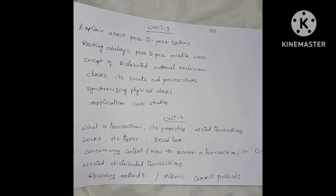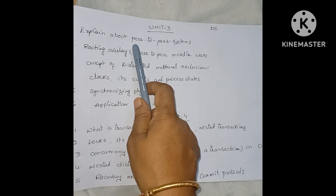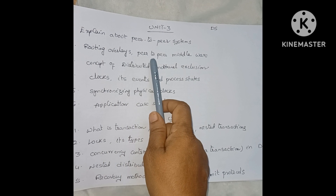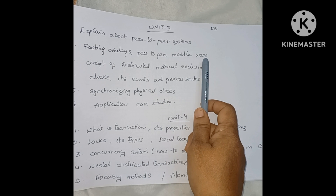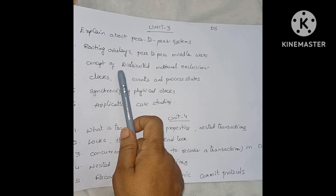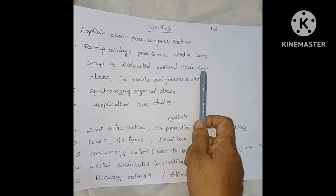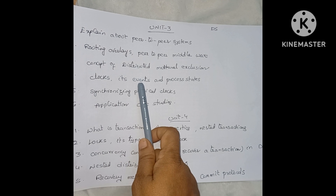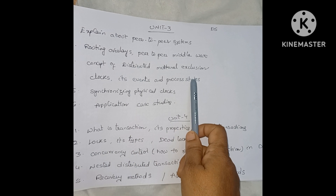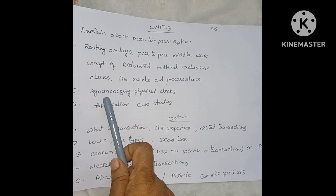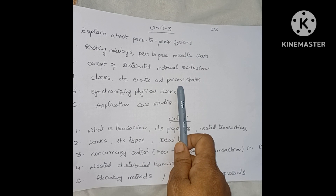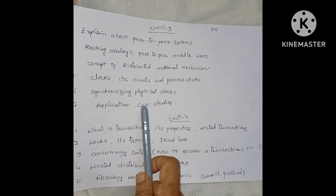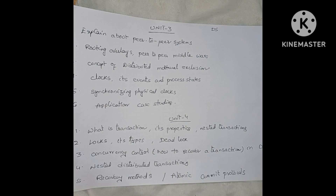Unit 3 important questions: explain about peer-to-peer systems, routing overlays, and peer-to-peer middleware. Next, explain the concept of distributed mutual exclusion — an important question. Also, clocks, their events and process states, and synchronizing physical clocks — an important question. Finally, some case studies and applications using case studies.